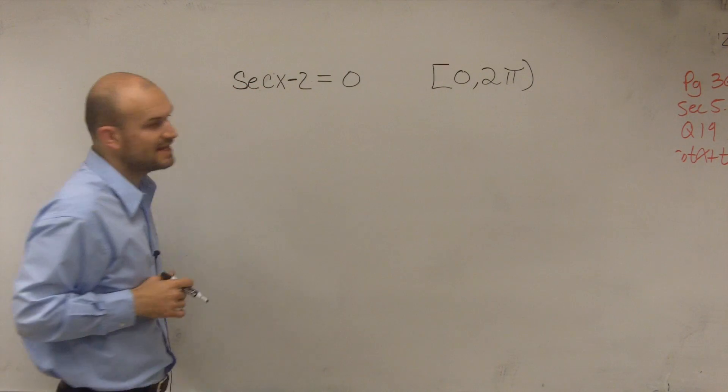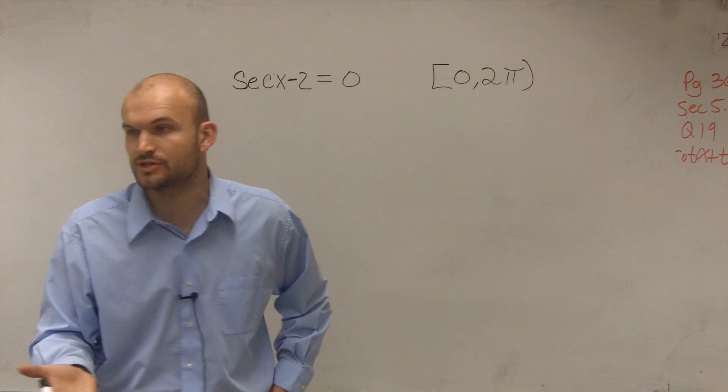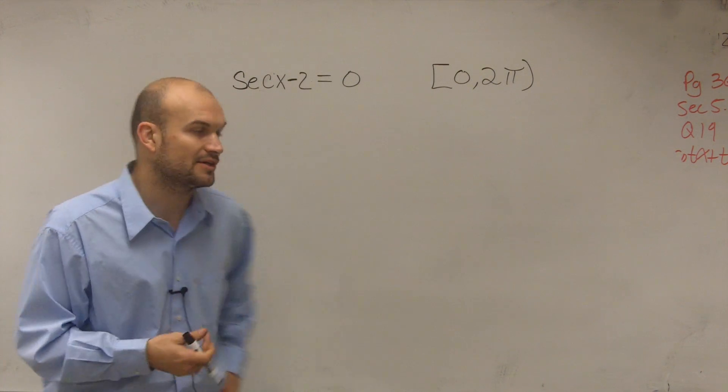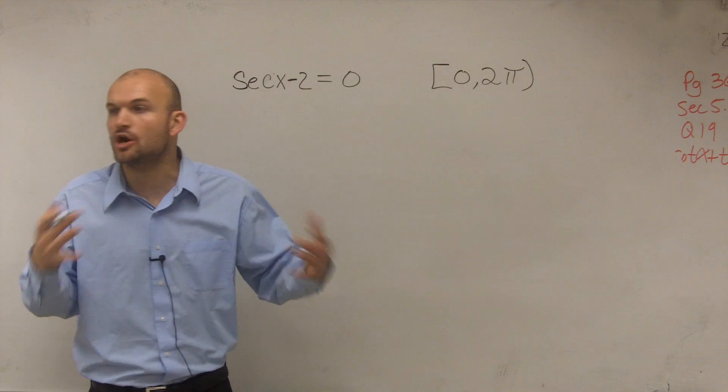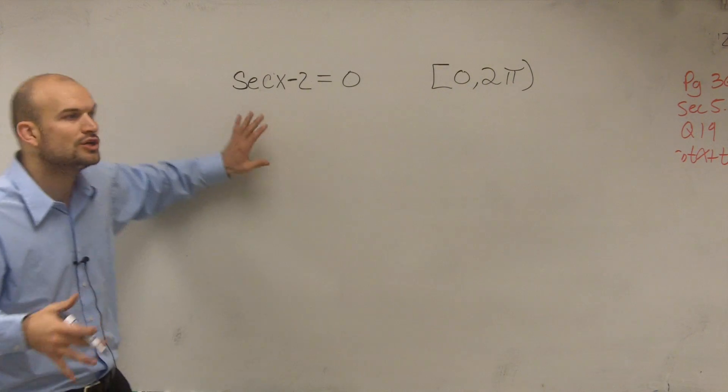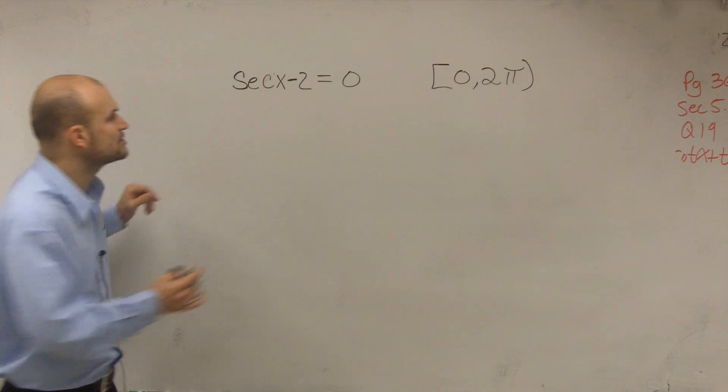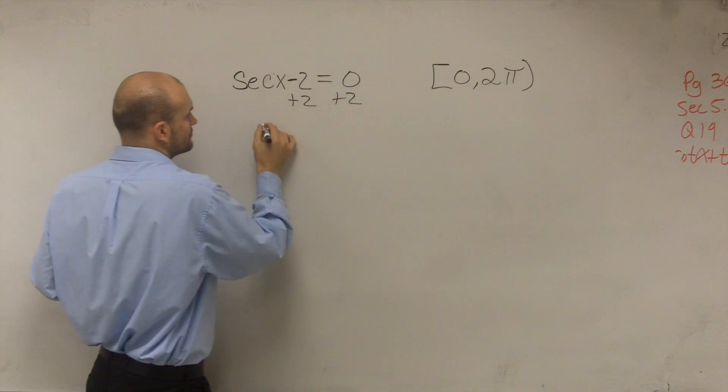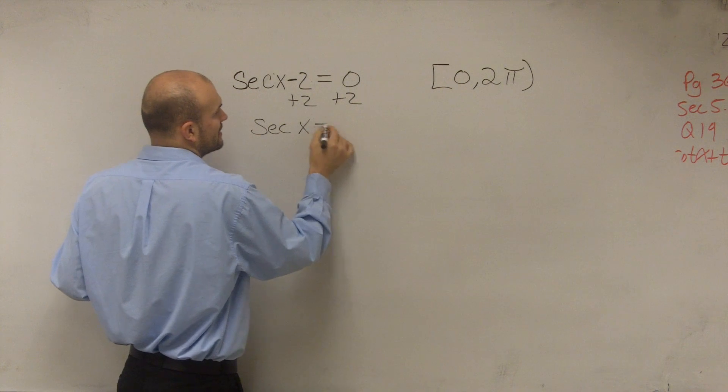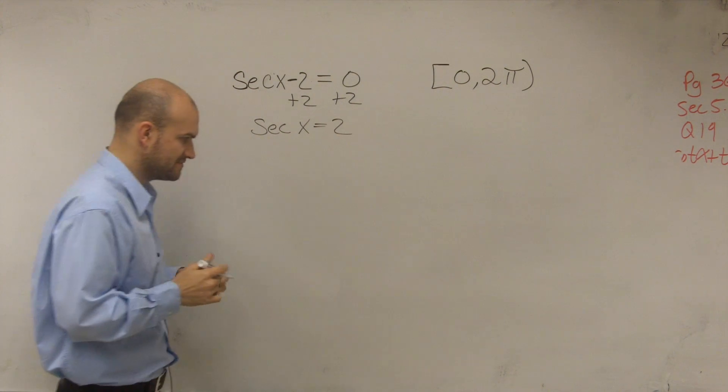First thing, it says secant of x minus 2. What we're going to want to do is solve for x - find the value. We're going to use our identities, solving techniques, and inverse operations to isolate our function. So to do that, I'm going to add 2, and you get secant of x equals positive 2.